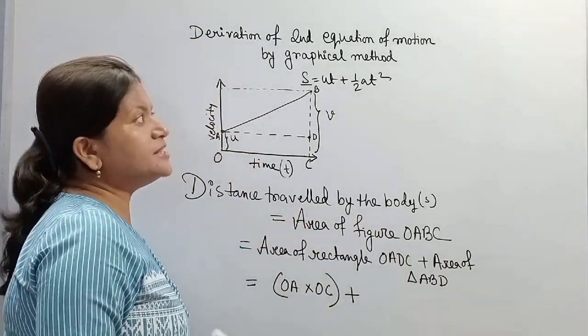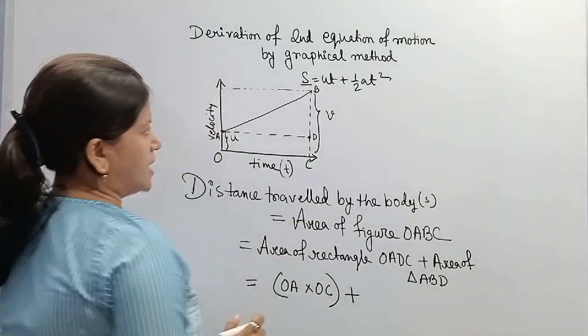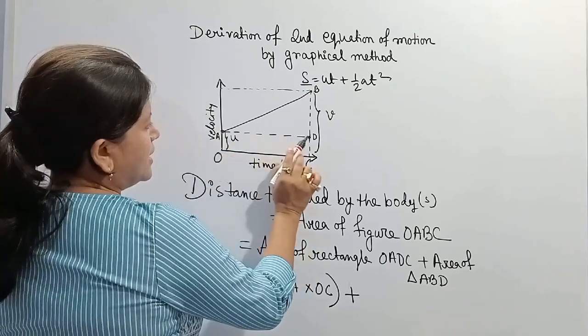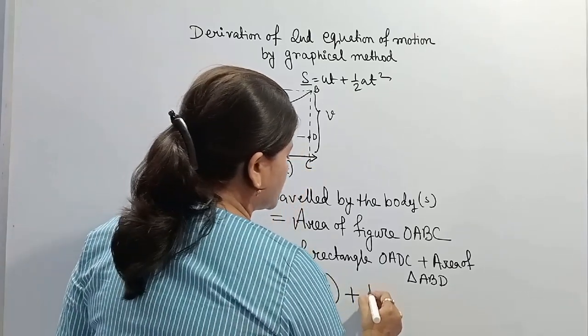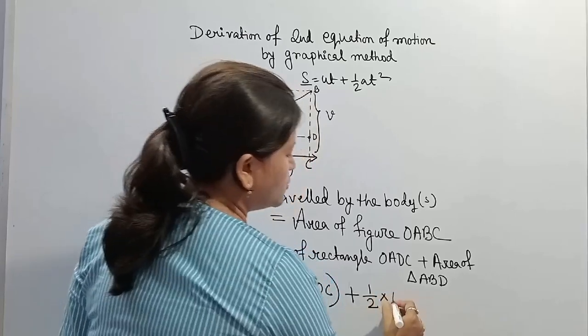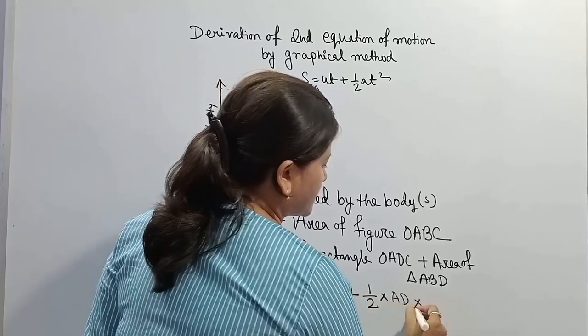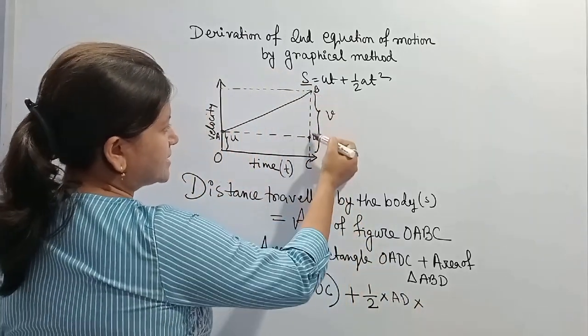Area of triangle is half into base into height. Here AD is the base, so half into AD, into height BD.